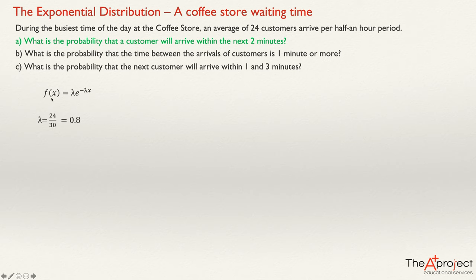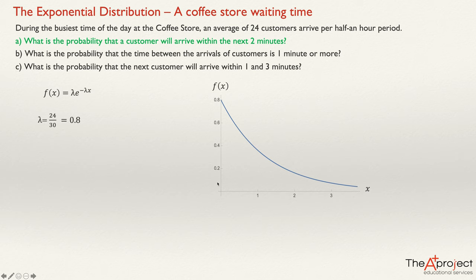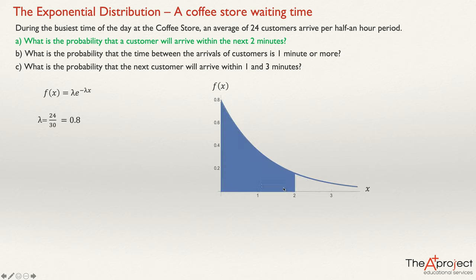We can sketch a graph of this distribution — an exponential curve going down, with the y-intercept equal to lambda = 0.8. The question asks for the probability that the random variable X is less than 2 minutes, which corresponds to the area under the curve between 0 and 2. We need to compute this area, which is the cumulative probability.